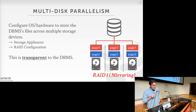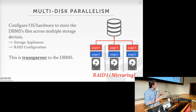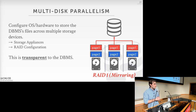The important point is that all of this RAID configuration happens transparently to the DBMS. The DBMS doesn't know what's happening at the hardware level — it just sees one logical disk that has the higher throughput or latency advantages that RAID provides.